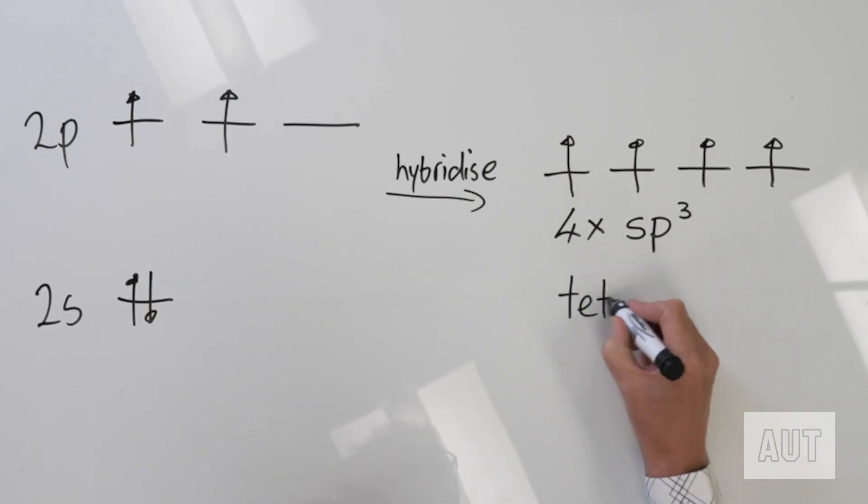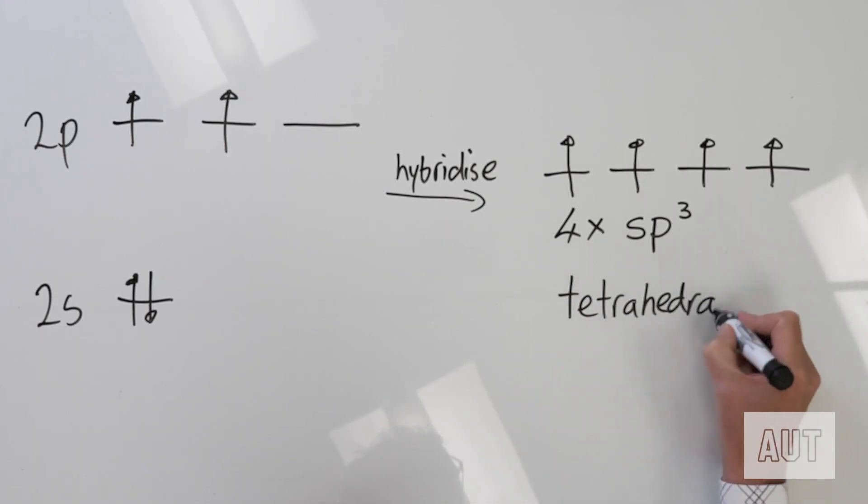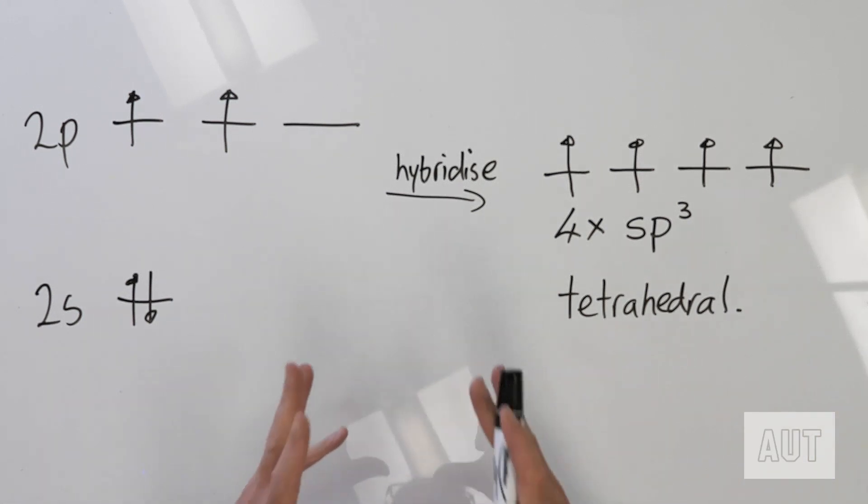Even better still — what's the best way of arranging four things around a central atom? How do you get things furthest apart from each other if you've got four of them around a central atom? The answer is a tetrahedral arrangement — that puts things as far apart as they can possibly be in space. So by hybridizing these orbitals: number one, we've got four unpaired electrons, therefore we can form four bonds; number two, those orbitals are arranged in a tetrahedral arrangement, which reproduces the geometry of the methane molecule.